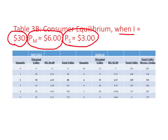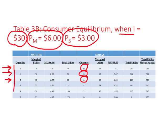Given the new income and prices, let us look at the choices available. If this person watches no movies they can buy 10 sodas. If they watch one movie, they spend $6 out of $30, leaving $24 for eight sodas. If they buy two movies, they spend $12, leaving $18 for a maximum of six sodas. We list all complete consumption choices available in this way.